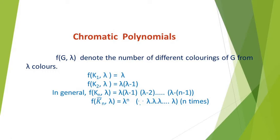Likewise, we can generalize. In general, f(Kn, lambda) = lambda(lambda-1)(lambda-2)...(lambda-n+1). The explanation is: for the first vertex there are lambda possibilities, for the second vertex lambda minus 1, because we already assigned one color to the first vertex. For the third vertex, lambda minus 2 possibilities, because we assigned two colors to the first two vertices. Likewise, we generalize the possibilities for all n vertices.